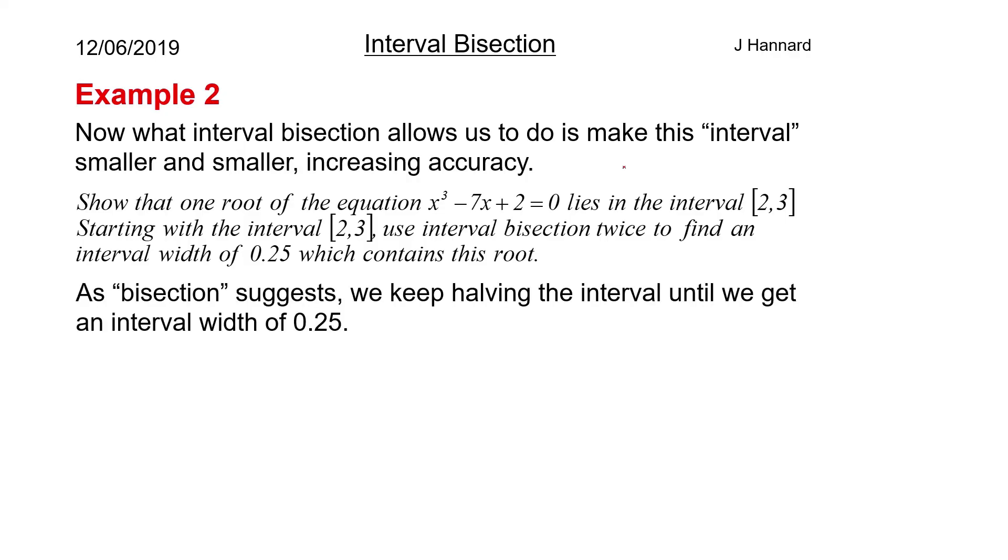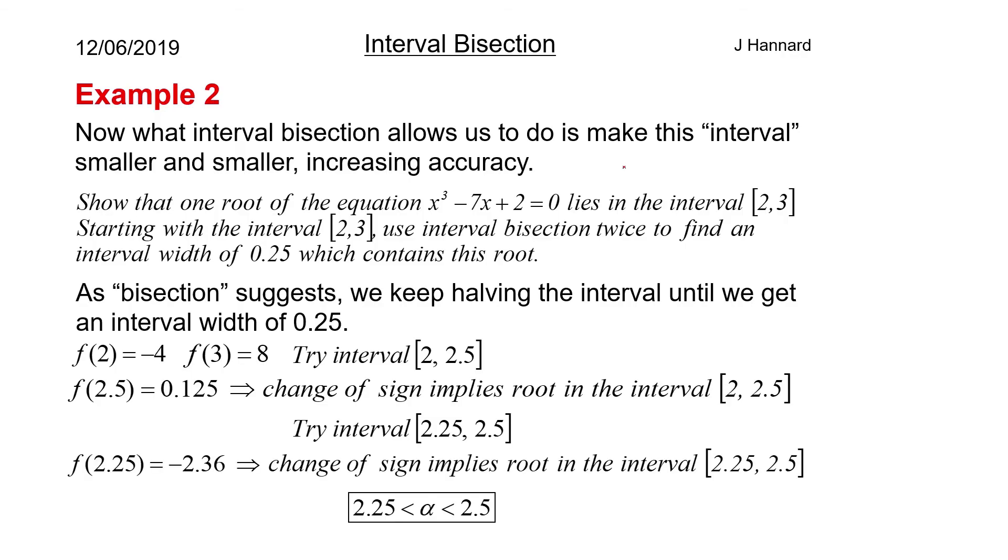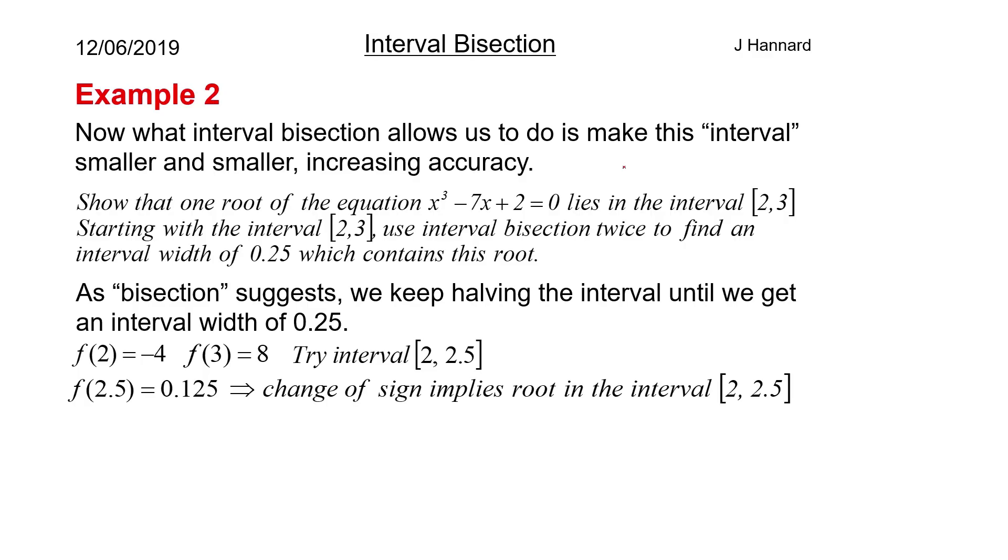So as bisection suggests we keep halving the interval until we get an interval width of 0.25. So first we split that interval in half. So we've got an interval width of 1 at the moment between 2 and 3. So we're going to split that interval in half and try 2.5. f(2.5) is 0.125 which is positive. Remember f(2) is minus 4 which is negative. So there is a change of sign between that interval. So the change of sign implies that the root is between the interval [2, 2.5]. So remember that's a width of 0.5.